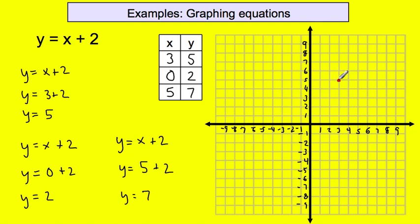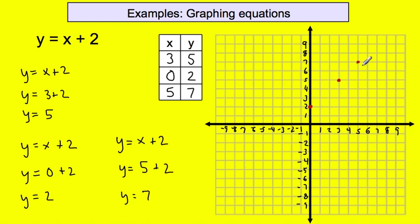The point goes right on the line. Second ordered pair: x equals 0, y equals 2. Since x equals 0, I don't move right or left — I'm right in the middle — then I move up to 2 and put my point at (0, 2). Last point: x equals 5, y equals 7. I move over to 5 on the x axis, then count up 7 on the y: 1, 2, 3, 4, 5, 6, 7. Three points are now on the graph. I've populated my x-and-y table, so now I connect the dots.